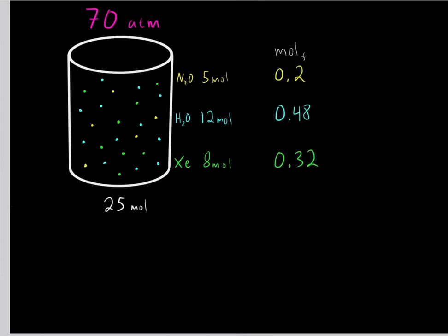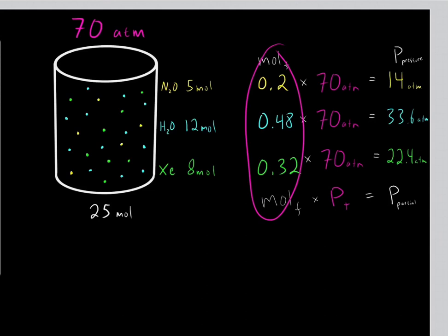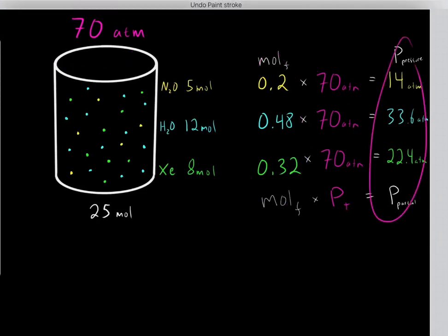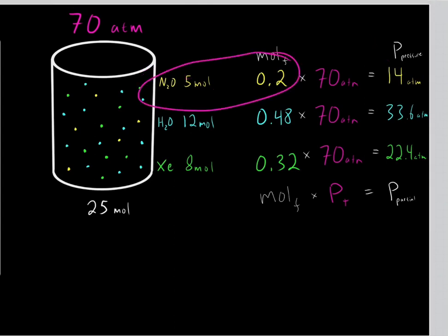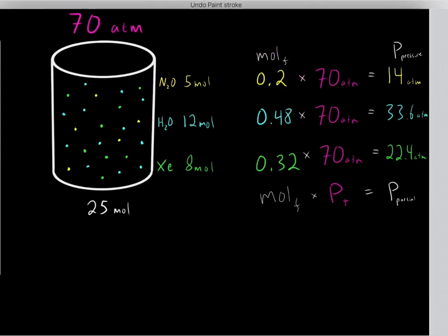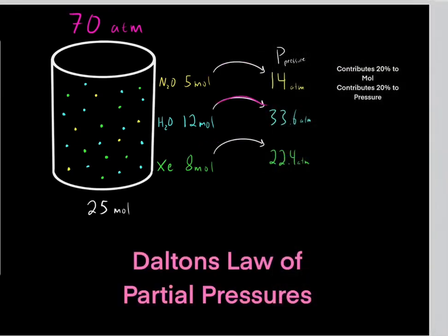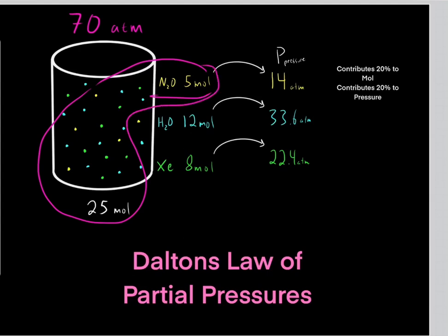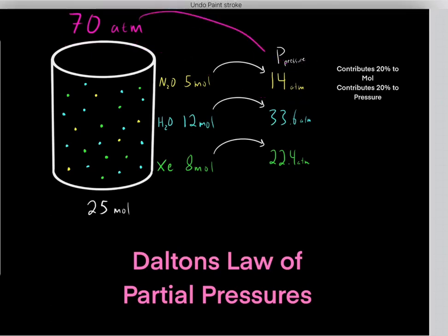The next step is to find the partial pressure of each gas by multiplying the mole fraction by the total pressure. The partial pressure of dinitrogen oxide is 14 atmospheres, because a mole fraction of 0.2 multiplied by 70 atmospheres gives 14 atmospheres. This makes sense: if dinitrogen oxide contributes 20% of the moles, it contributes 20% to the total pressure, and 20% of 70 atmospheres is 14 atmospheres.